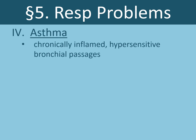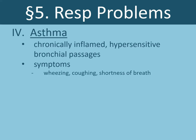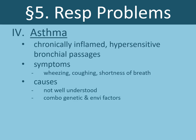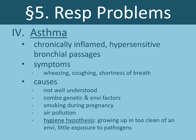Finally, we have asthma — chronically inflamed, hypersensitive bronchial passages. Symptoms include wheezing, coughing, and shortness of breath, and can be very serious. The causes of asthma are not well understood but are thought to be a combination of genetic and environmental factors. Environmental factors include cigarette smoking during pregnancy, exposure to cigarette smoke during early childhood, and exposure to air pollution. One explanation for asthma and the rise in other allergic diseases is the hygiene hypothesis — the idea that growing up in too clean an environment with little exposure to pathogens causes problems in the development of the immune system.